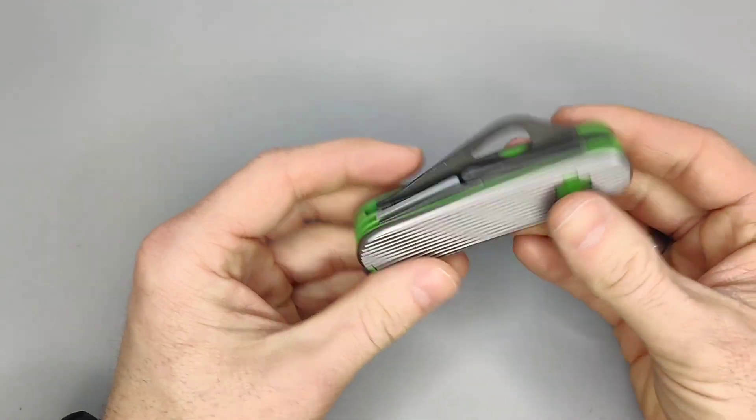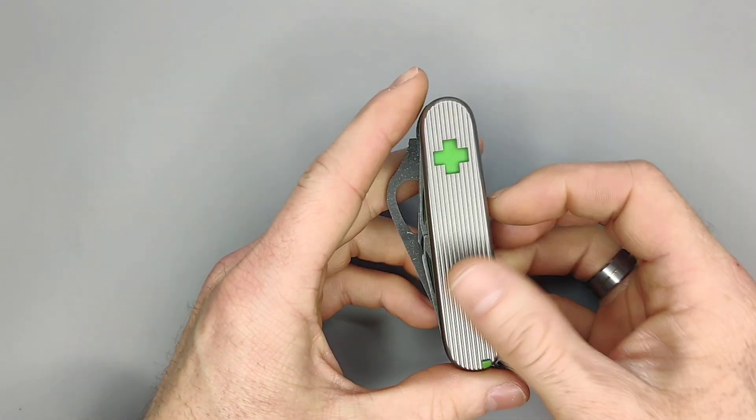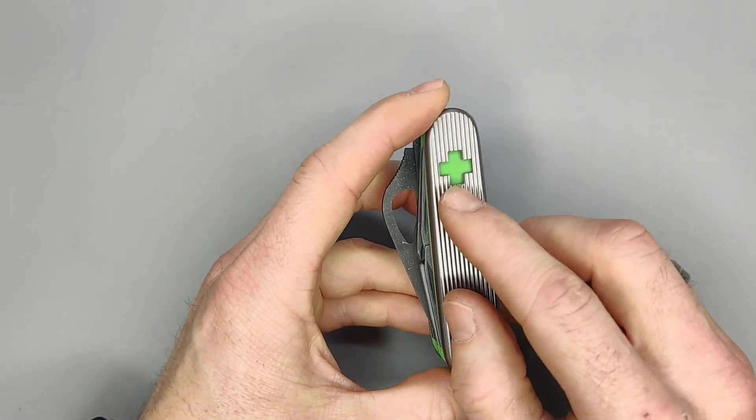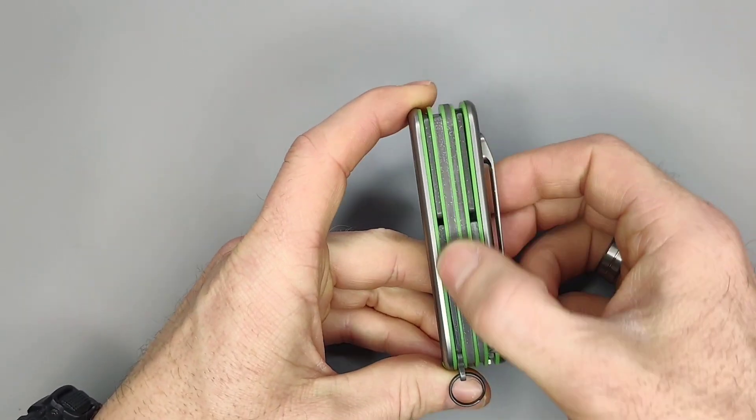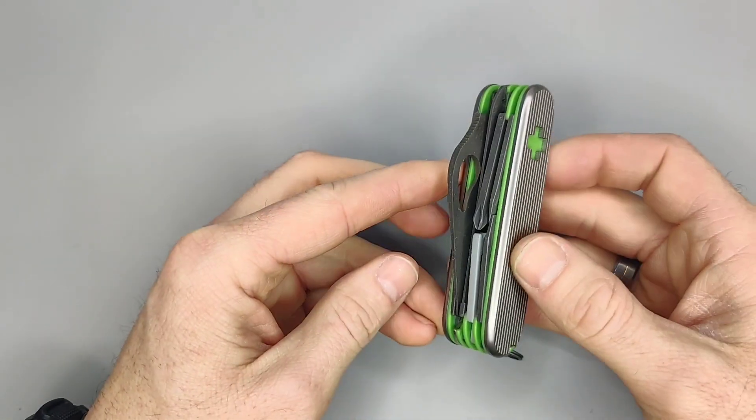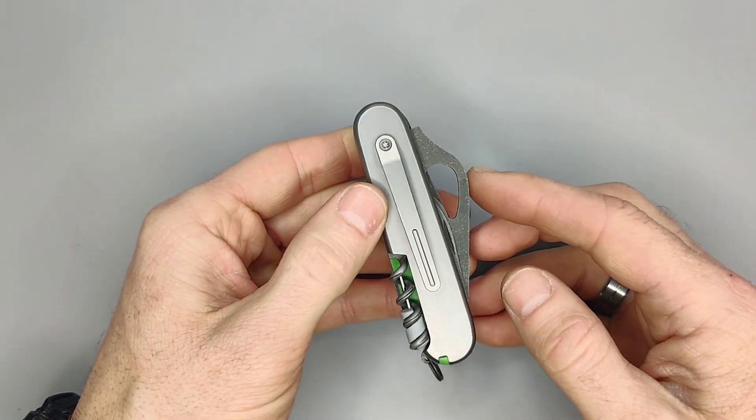You can see the green G10 liners, also the green G10 is peeking through the logo. The tools have been acid etched and aluminum washed.